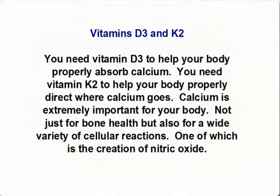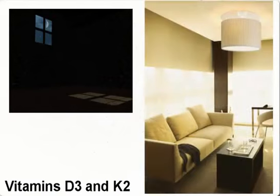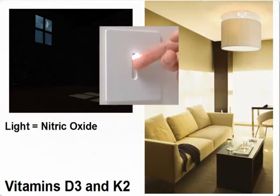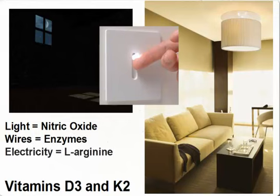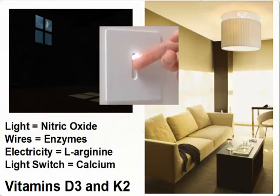In addition to L-arginine and L-citrulline, ProArginine Plus also includes other ingredients. I'd like to highlight vitamins D3 and K2. You need vitamin D3 to help your body properly absorb calcium. You need vitamin K2 to help your body properly direct where calcium goes. Calcium is important not just for bone health, but also for a wide variety of cellular reactions, one of which is the creation of nitric oxide. If you think of nitric oxide as the light, the enzymatic process as the wiring, and L-arginine as the electricity, then calcium is the switch. Vitamin D3 and vitamin K2 help to regulate your calcium levels so that this reaction can properly take place.